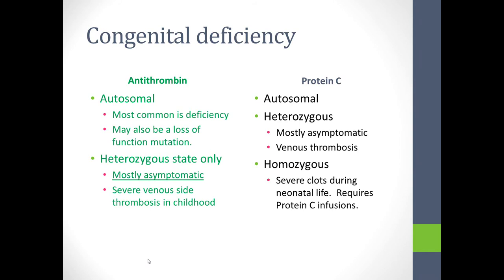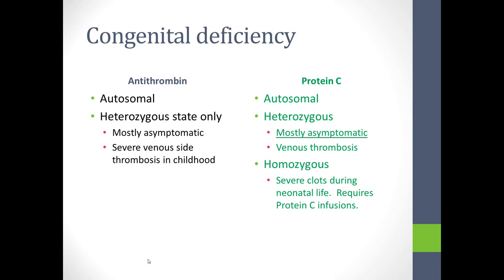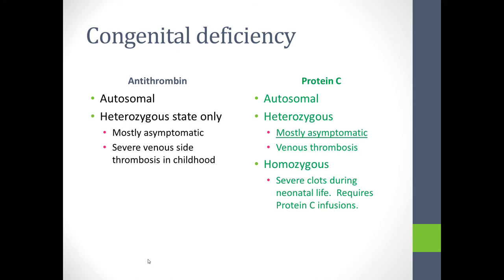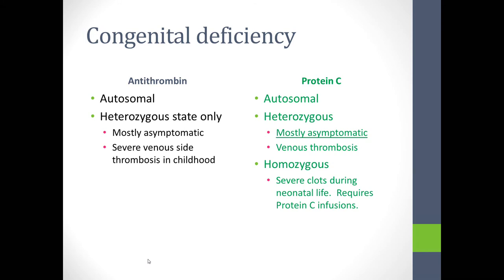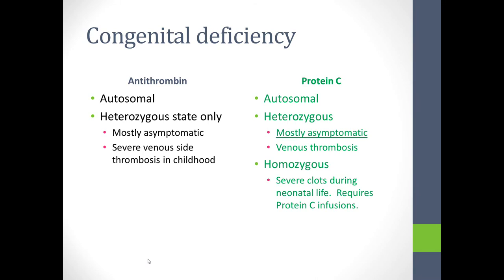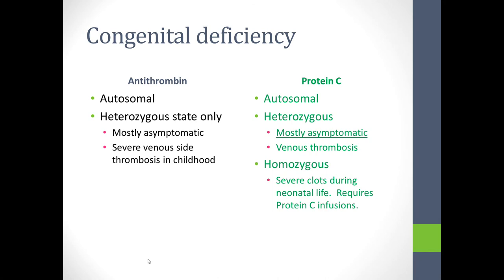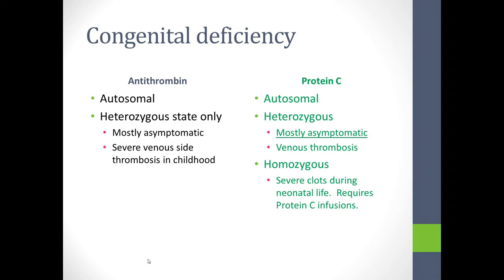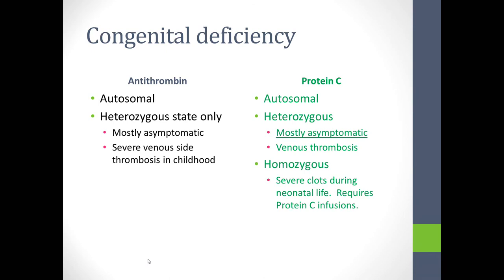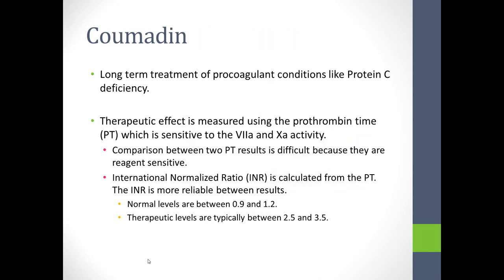Protein C is also autosomal and heterozygous. This is mostly asymptomatic and is associated with venous thrombosis risk largely during adulthood or during childhood when other venous thrombosis risk factors are present. The homozygous form is an extremely dangerous problem, associated with severe clots in both the venous and arterial sides beginning in neonatal life. These patients, in order to stay alive, require infusion of protein C concentrates.